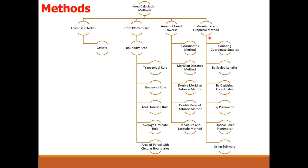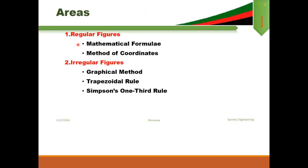The next broad category is instrumental and graphical methods. In this category, you can see counting coordinate squares, by scaled length, by digitizing coordinates, and by the planimeter. A planimeter is a simple instrument used to calculate the area using the plan or map — so if you have only paperwork, you can calculate the area using sheets with a planimeter. Other options include the optical polar planimeter and different types of software. For regular figures, the two most common methods are mathematical formulae and method of coordinates, and for irregular figures, trapezoidal and Simpson's rule.